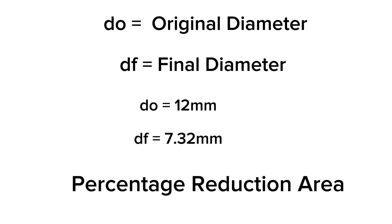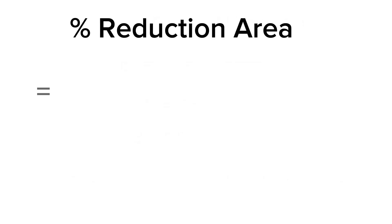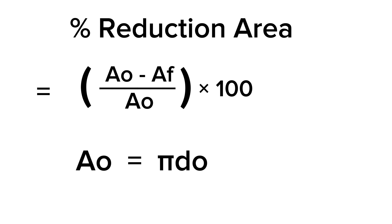Percentage reduction area formula: (Ao - Af)/Ao times 100. Ao equals πdo²/4.